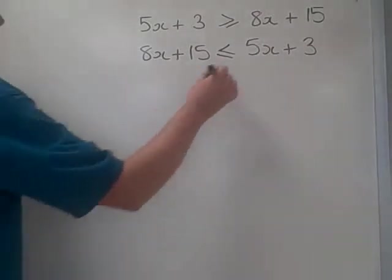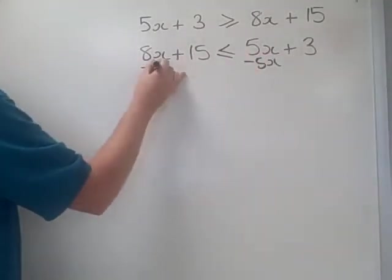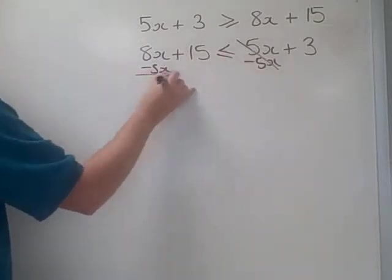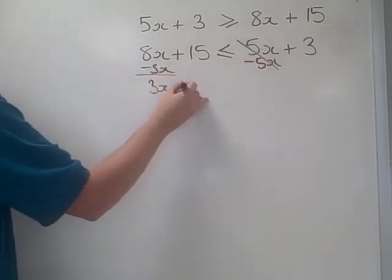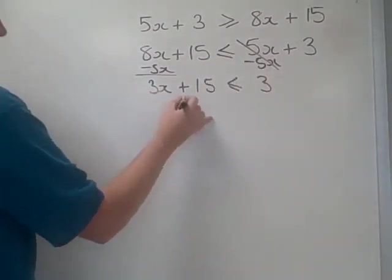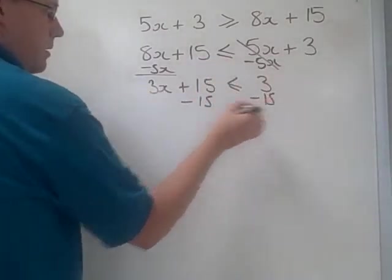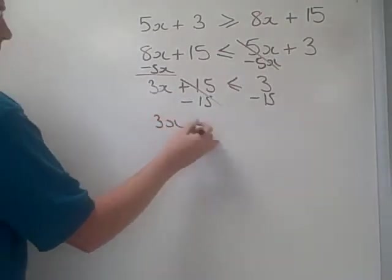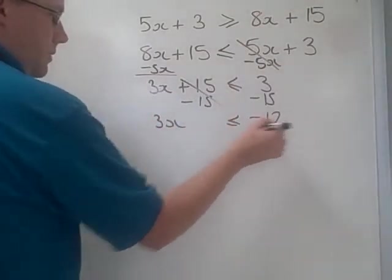Now, we can go ahead and answer our question. So, we can take away 5x from both sides. That's going to cancel. And, on this side, I get left with 3x. Positive 3 is just 3. Subtract 15 from both sides. That's going to cancel. And, I get 3x is less than negative 12.